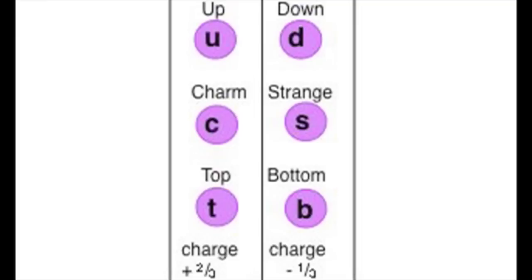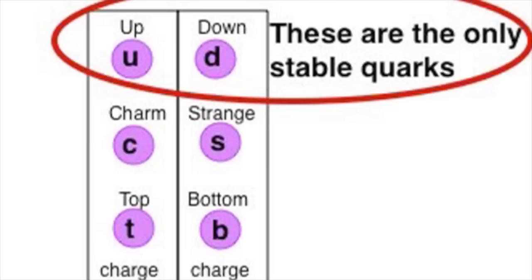Three of these, up, charm and top, have a charge of plus two thirds, whereas down, strange and bottom have a charge of minus one third.